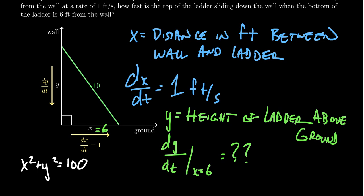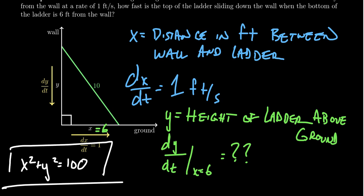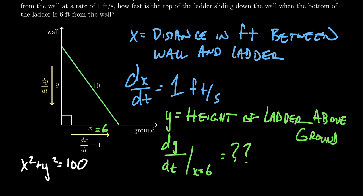I don't want to plug in X equals six yet, because I need X and Y to be related variables. Plugging in X equals six now would take away the variability of X. We're allowing X and Y to vary — they're connected by this equation. I can put a constant in for the ladder length because that never changes; the ladder will always be 10 feet long, so 10 squared will always be 100. We want to wait until after taking derivatives to plug in X equals six.